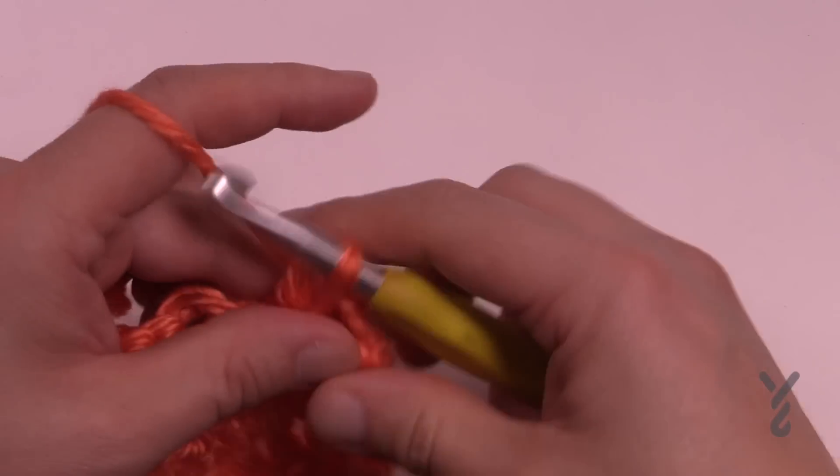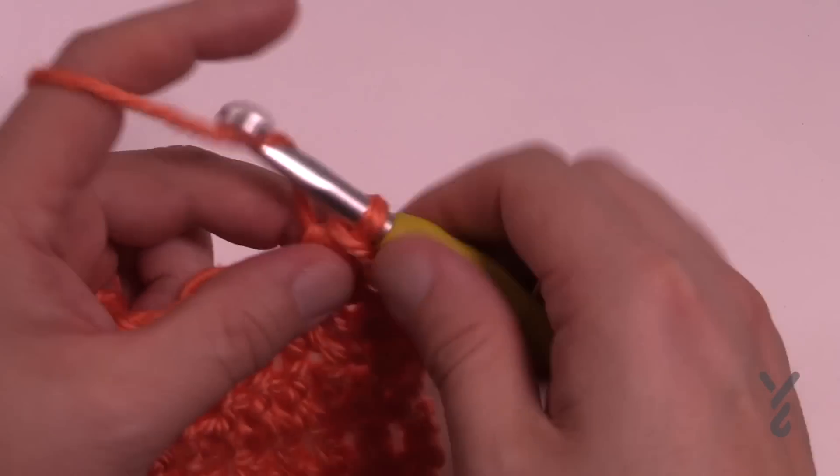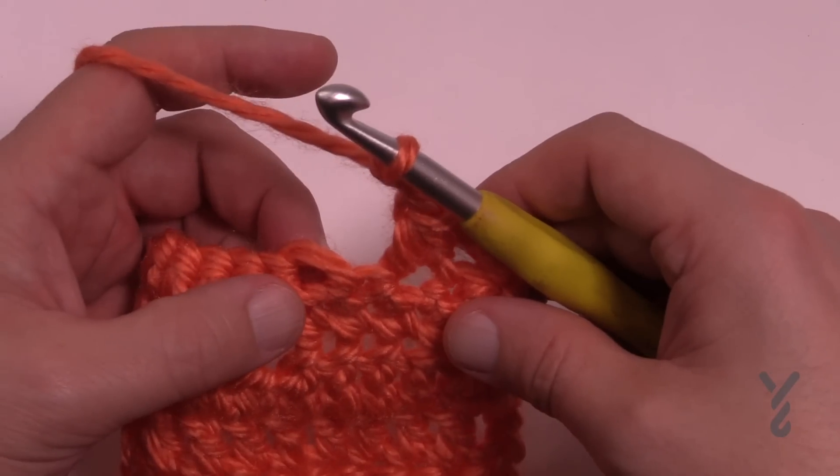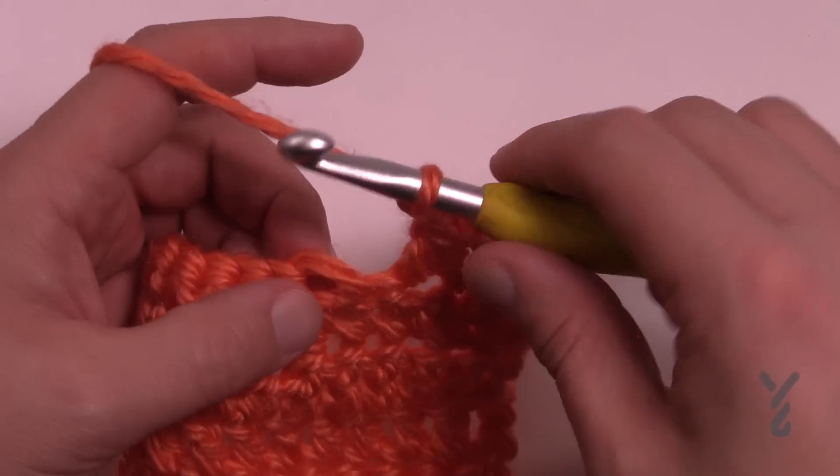Just like that. Okay, so let's do that again. So let's just do this one here. So it's two half double crochets that are gonna make up a cluster.